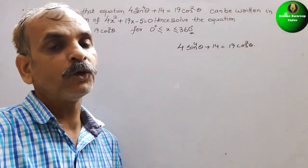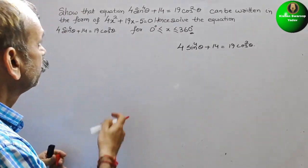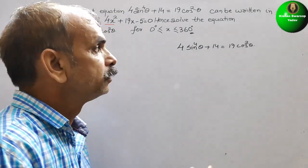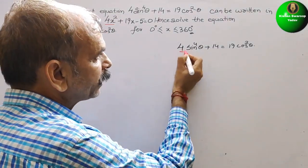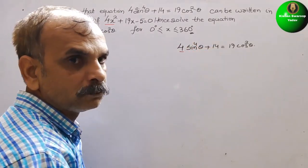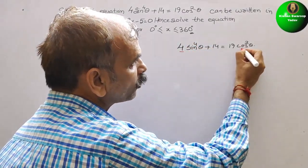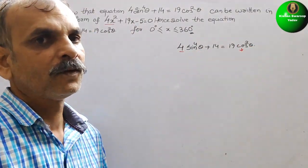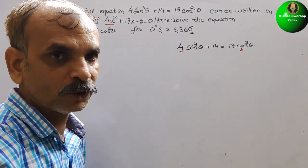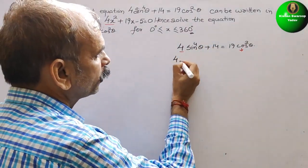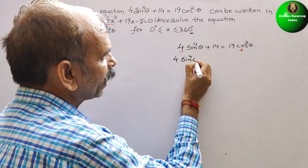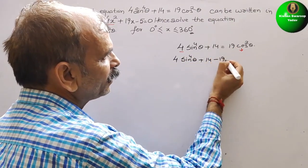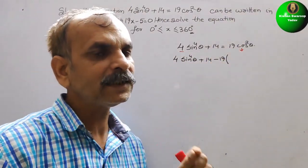Now, what we have to convert? They have given 4x². That means 4 is here and this will become your x². So that means we have to convert cos²θ into sin²θ. Bring this to this side also. So here you will get 4sin⁴θ + 14 − 19 in bracket (1 − sin²θ).